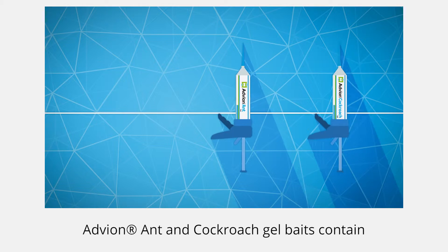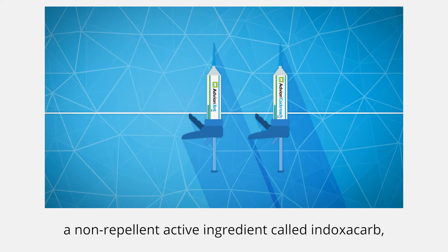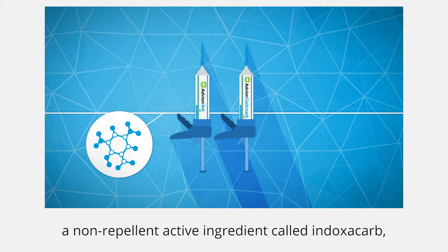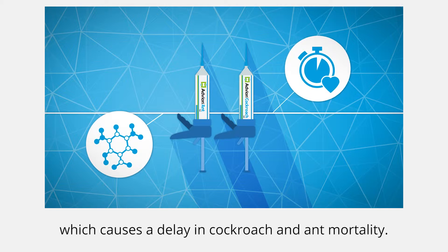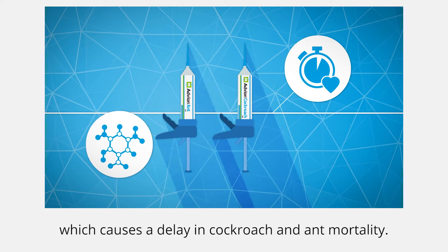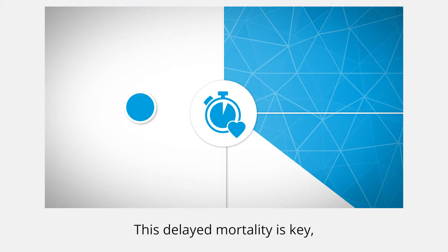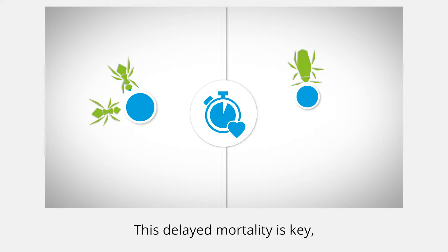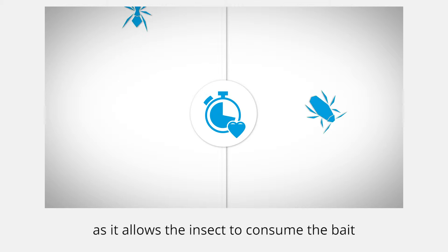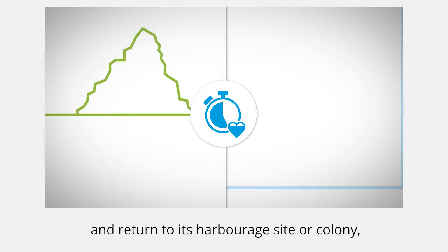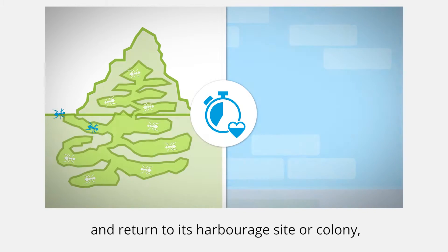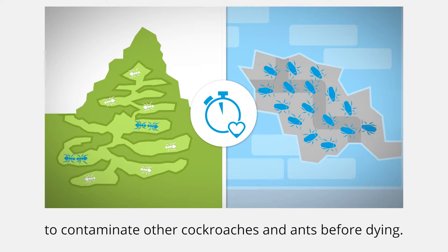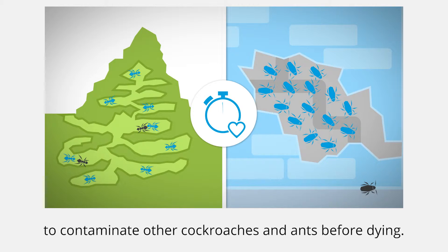Adveant ant and cockroach gel baits contain a non-repellent active ingredient called indoxacarb, which causes a delay in cockroach and ant mortality. This delayed mortality is key, as it allows the insect to consume the bait and return to its harbourage site or colony to contaminate other cockroaches and ants before dying.